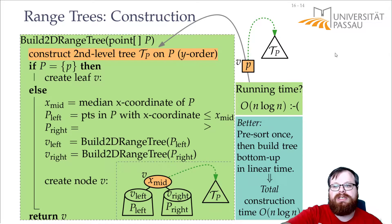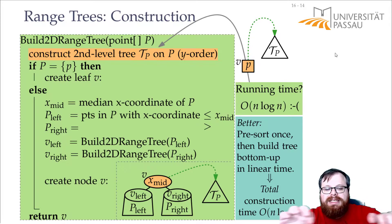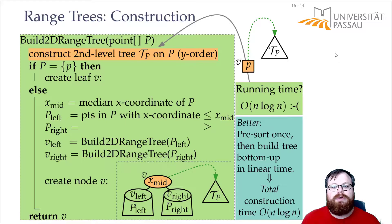So in the root, we store a second tree that has order of n vertices. In its children, we have two second trees, both of them have order of n over two vertices. But we have two of them, so two times order of n over two. And then for the next one, we have four, all of them have order of n over four. So there's a lot of additional information that we have to store.